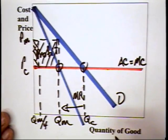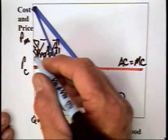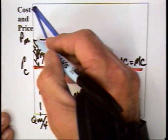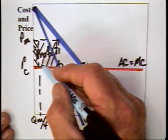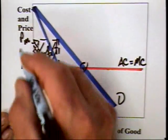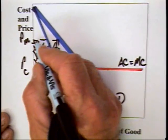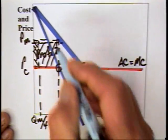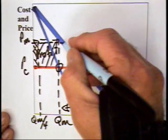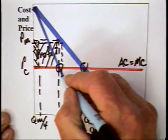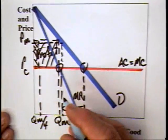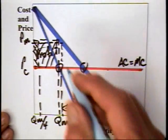Well, therein lies the problem in maintaining a cartel, because each producer can reason, well, I'm only getting this area here in terms of cartel profits. If I somehow just lower my price a little bit below PM, then I can sell more than QM divided by four. I might, in fact, be able to extend the market, take over the entire market, and get more in the way of profits.